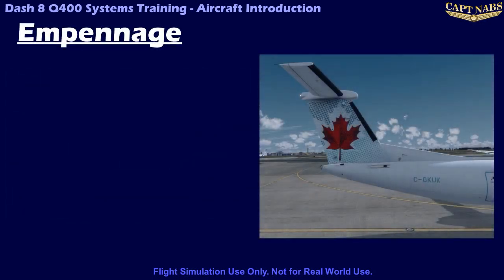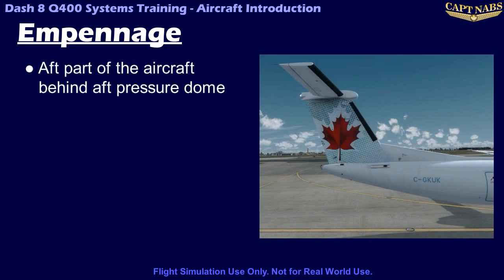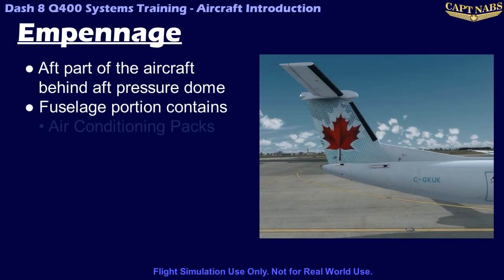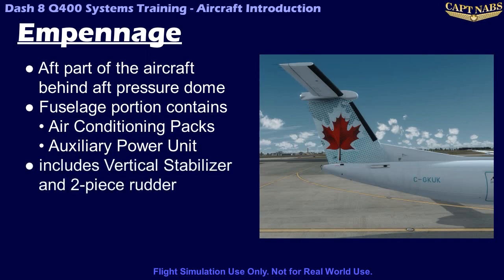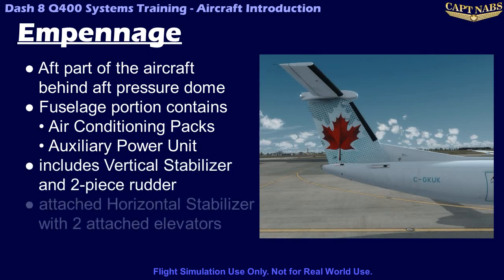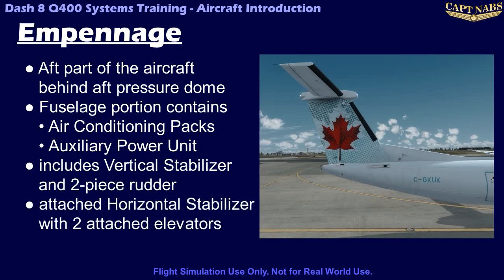The empennage is the part of the aircraft aft of the aft pressure dome. Contained within the fuselage portion of the empennage are the air conditioning packs and the optional APU. Connected to the fuselage is a vertical stabilizer with a two-piece rudder, and at the top of the vertical stabilizer is a horizontal stabilizer with elevator.